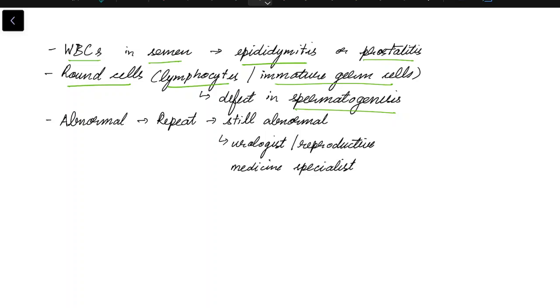If any of the parameters in semen analysis is abnormal, we need to repeat the semen analysis. Even on repeat examination, if the parameters are abnormal, you have to refer the male to a urologist or reproductive medicine specialist.